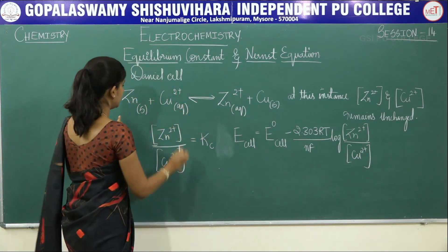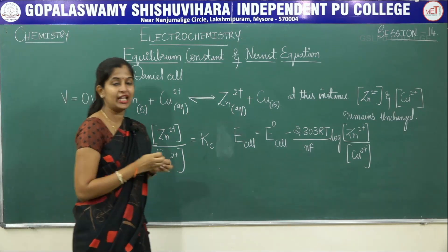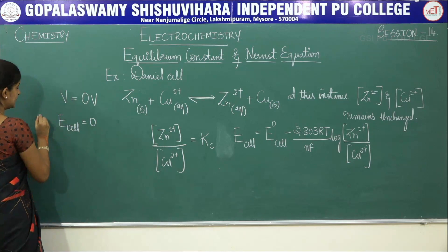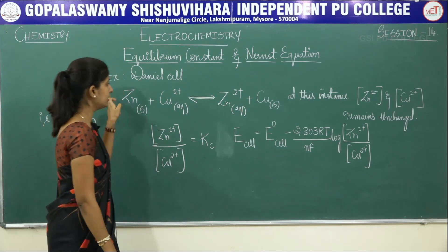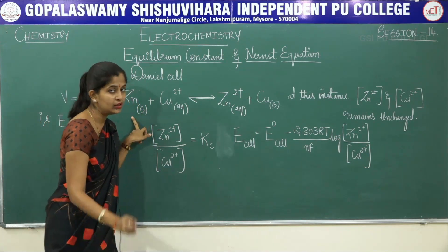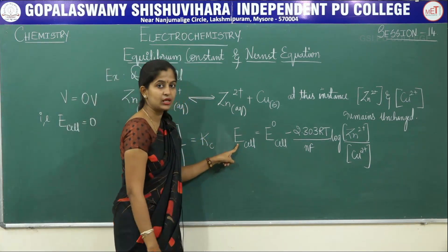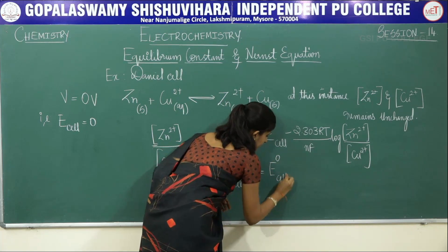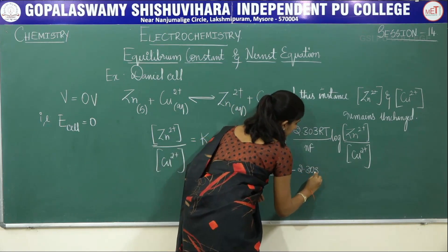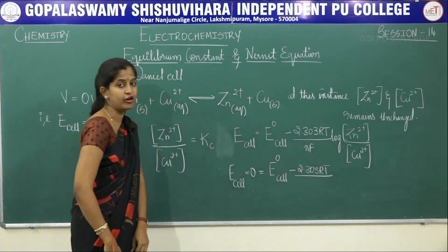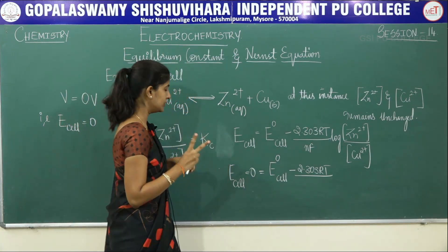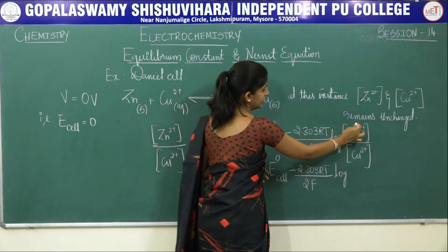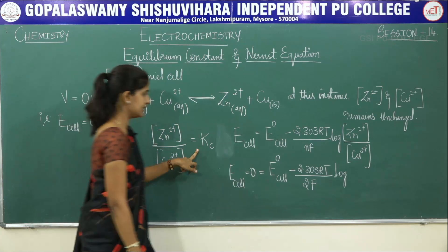At this instance — when the voltmeter shows 0 volts, meaning no electric current is passing through the cell — E_cell is equal to 0. When E_cell = 0, the reaction is at equilibrium, and since [Zn²⁺]/[Cu²⁺] equals Kc, substituting into the Nernst equation gives: 0 = E°cell − (2.303RT / NF) × log Kc. For the Daniel cell, N is equal to 2 because 2 electrons are transferred.